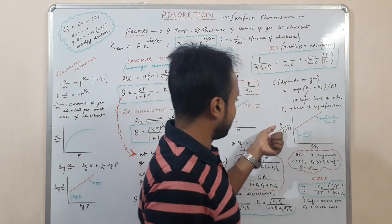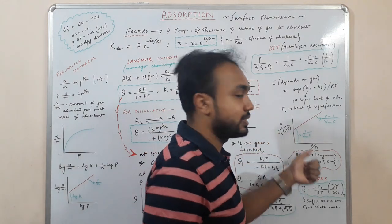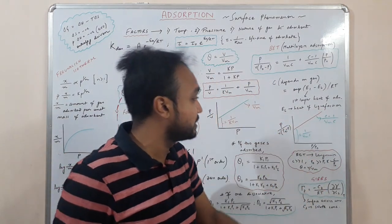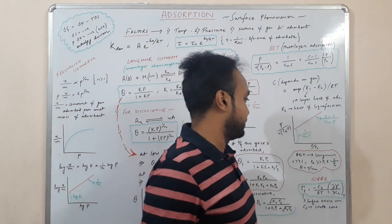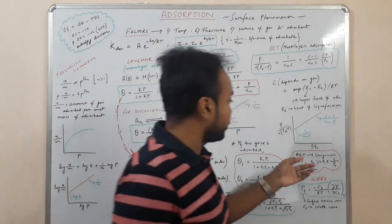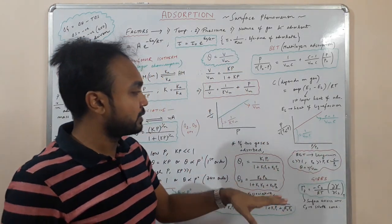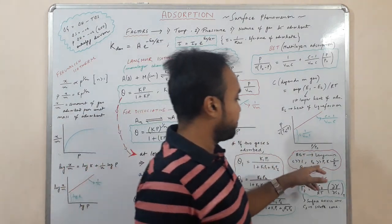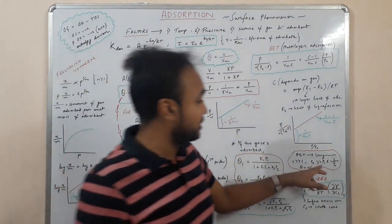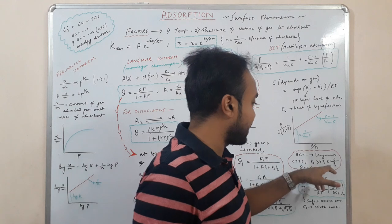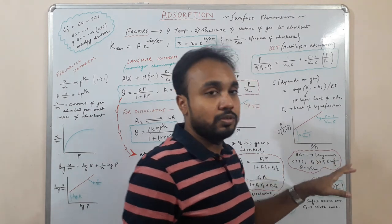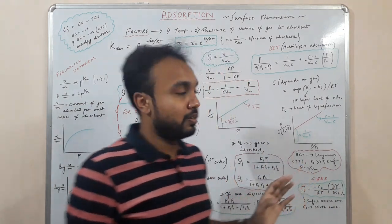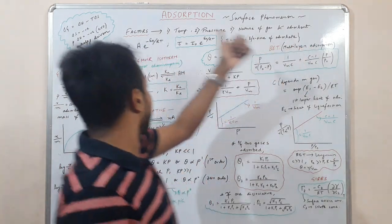Plotting P/[v(P₀ − P)] versus P/P₀ gives a straight line with slope (c − 1)/(v_m·c) and intercept 1/(v_m·c). To reduce BET to Langmuir, assume c ≫ 1 and P₀ ≫ P, and replace c/P₀ with k. Writing v/v_m as θ then recovers the Langmuir equation.